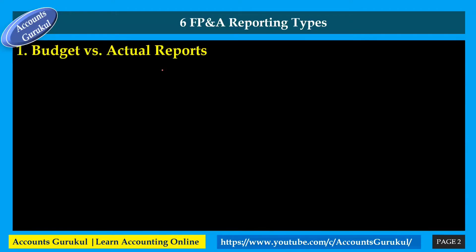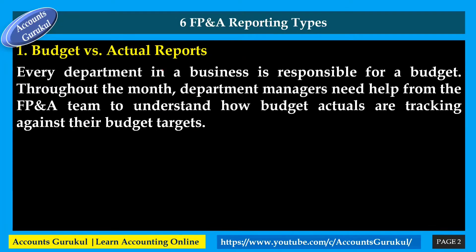The first report is budget versus actual reports. Finance planning and analysis involves planning and analysis, and the budget versus actual report is very important for management to know how much was budgeted versus how much was actually spent, along with commentary explaining the variance. Every department in a business is responsible for a budget, and department managers need help from the FP&A team to understand how actuals are tracking against their budget targets.